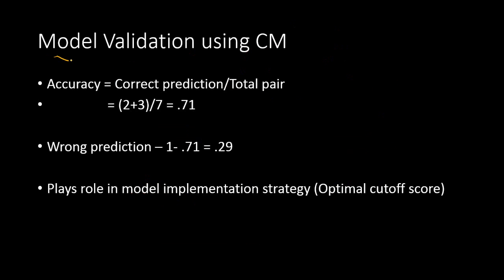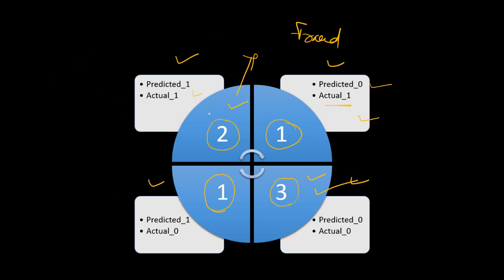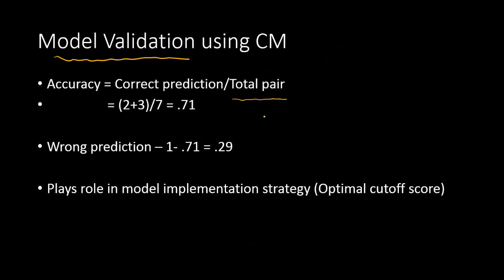You can use this matrix for model validation by computing what is known as the accuracy rate — calculated as correct predictions divided by the total number of pairs. In the previous example, accurate cases are two plus three, equaling five, and inaccurate cases are one plus one, equaling two. So the accuracy is five divided by seven, giving 0.71 — a 71% accuracy rate. We always want this percentage to be as high as possible.